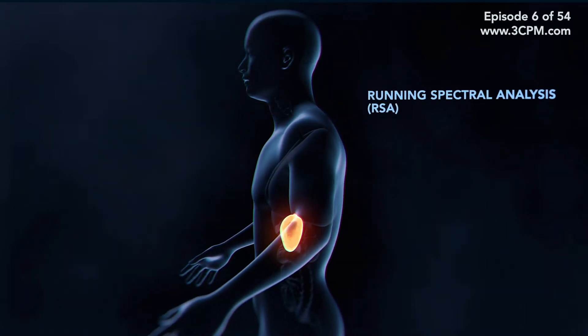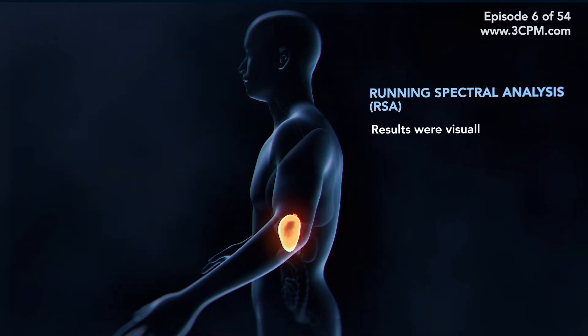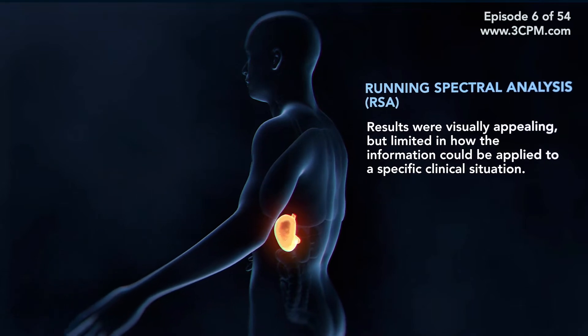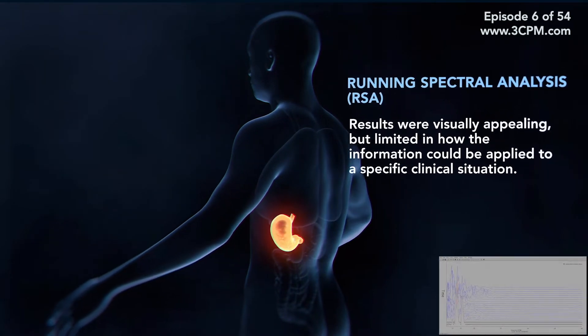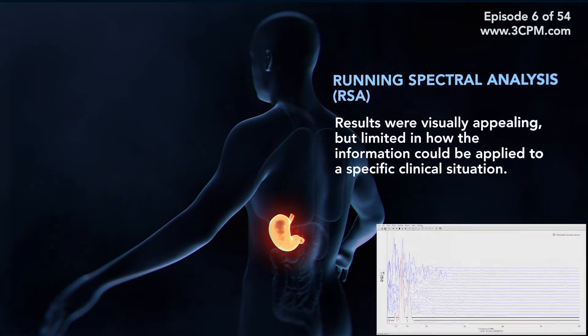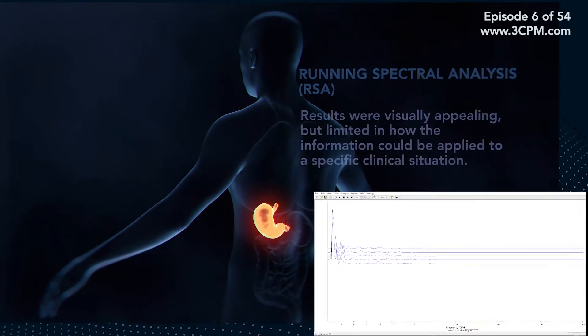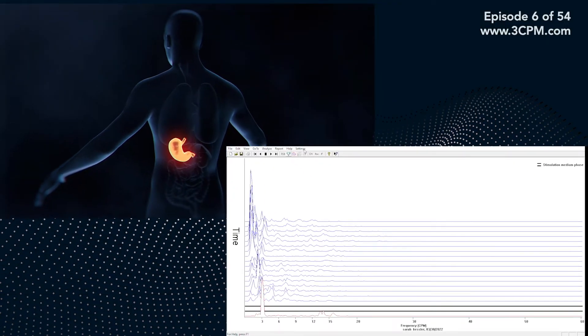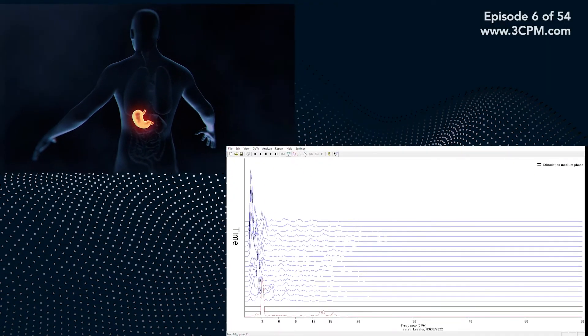Known as the RSA, or running spectral analysis, the results were visually appealing, but were limited in how the information could be applied to a specific clinical or disease situation.